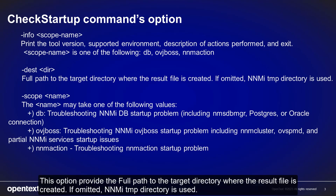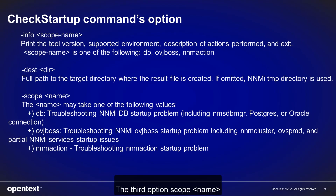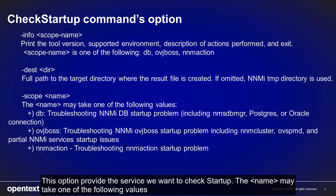The second option provides the full path to the target directory where the resource file is created. If omitted, the NNMi temp directory is used. The third option is scope, then name. This option provides the service we want to check startup.